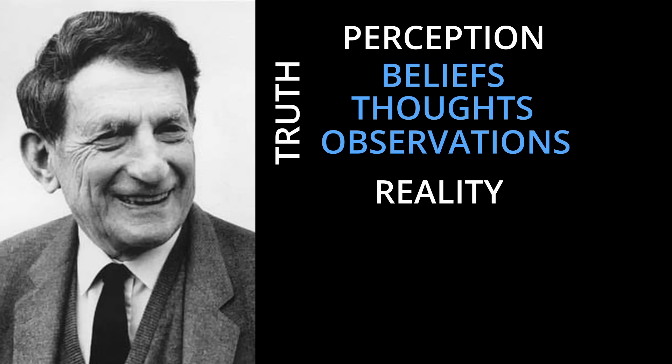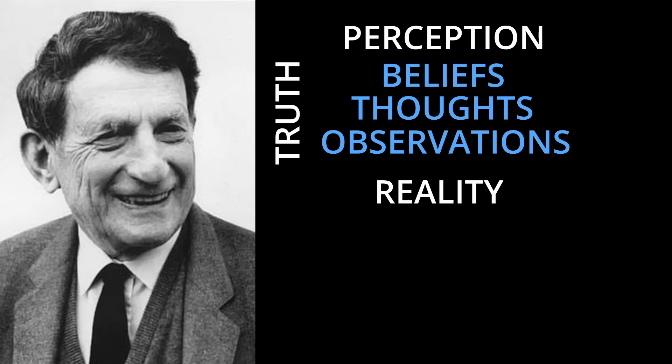He astutely remarked: reality is what we accept as true. What we accept as true is a reflection of our beliefs, which in turn are shaped by our perceptions. Our perceptions are influenced by what we seek. What we seek is guided by our thoughts. Our thoughts in turn are influenced by our perceptions. This dynamic relationship between perception, belief, and truth shapes our reality.